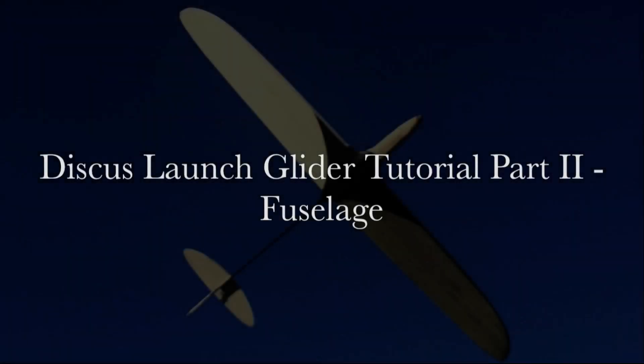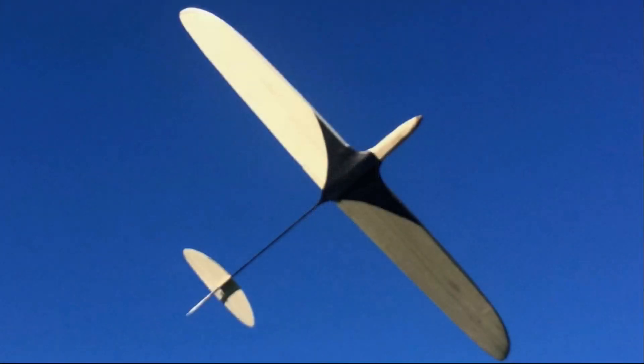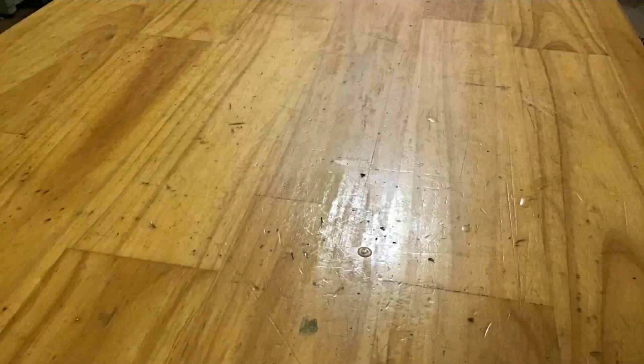Hello and welcome to the second episode in this tutorial series showing how to build a simple discus launch glider. In this episode we will see how to construct the fuselage. As you may remember, the aircraft we are building in this series is a simplified version of the one you see here. Last time we left off after having finished the wings.